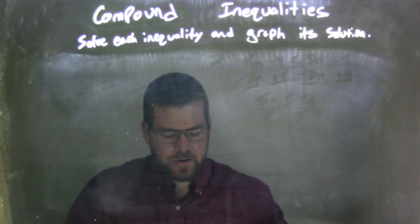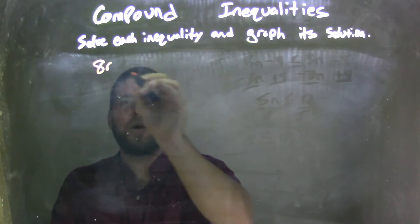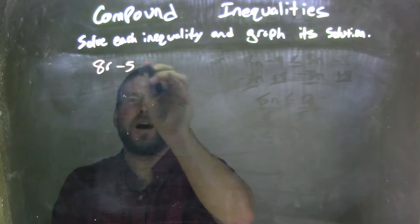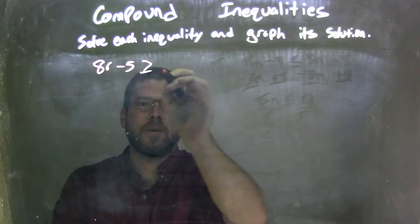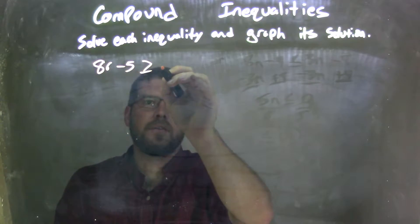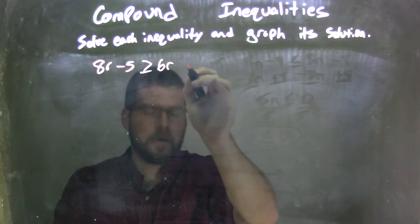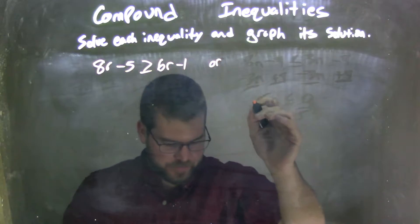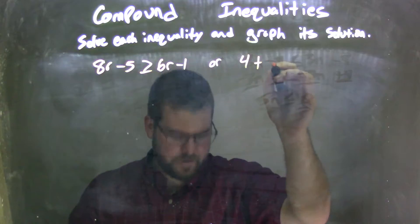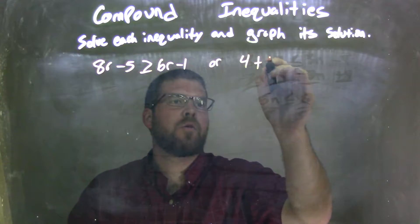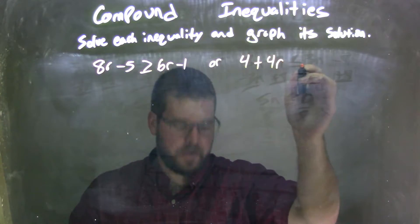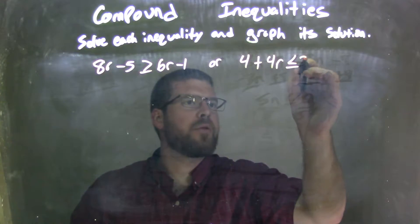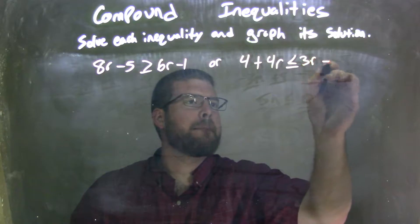So if I was given this inequality: 8r minus 5 is greater than or equal to 6r minus 1, or 4 plus 4r is less than or equal to 3r minus 3.